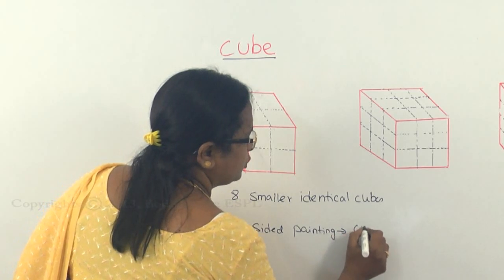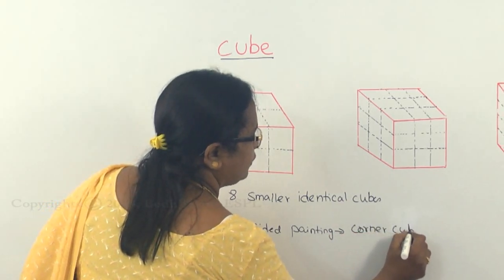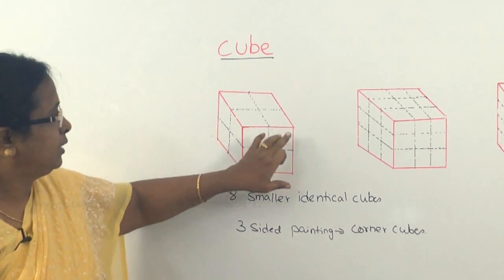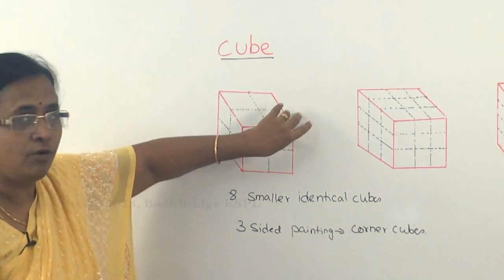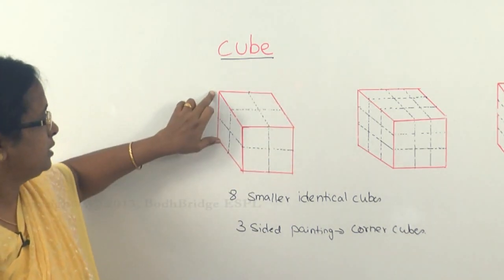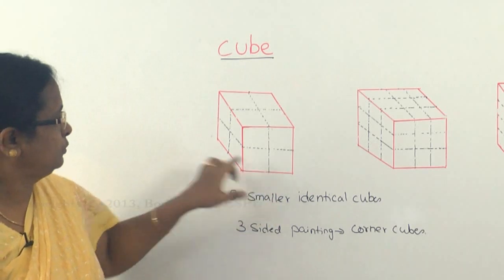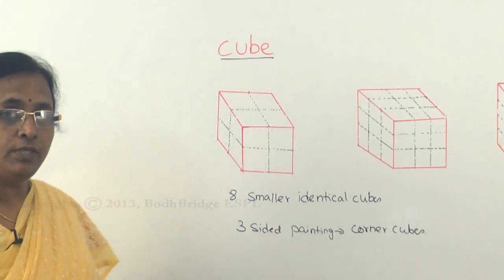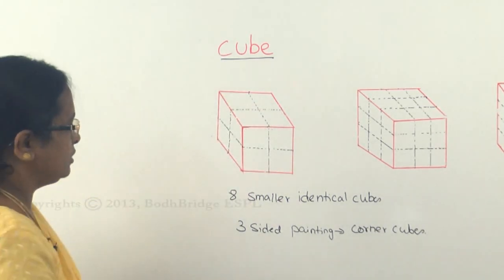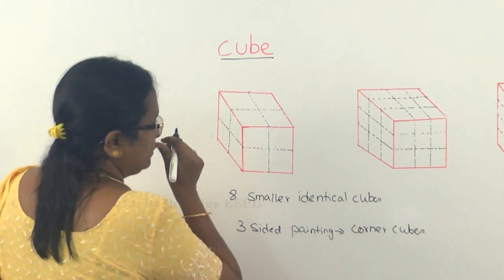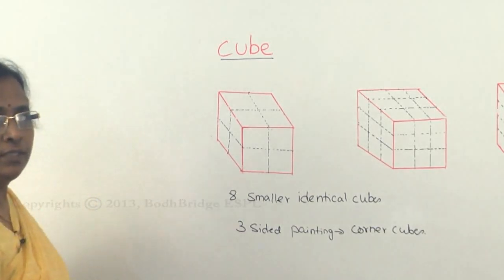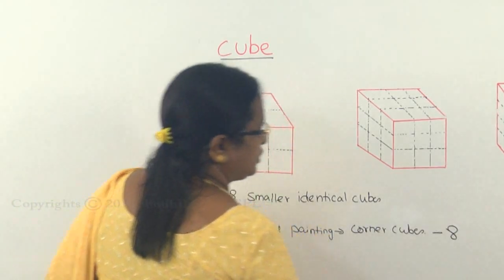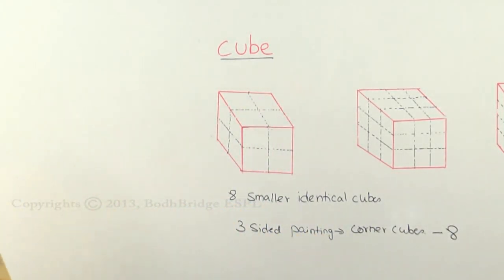Three-sided painting will come only in the corner cubes. You have to find out how many corner cubes there are. This particular one is a corner; similarly this one forms the corner of the larger cube, and this is another corner and another corner. Similarly down you have four corners. So all the eight smaller cubes after cutting are the corner cubes of the larger cube. There are totally four plus four — eight corners in this cube. All eight are three-sided painted, so eight of the smaller cubes are three-sided painted.